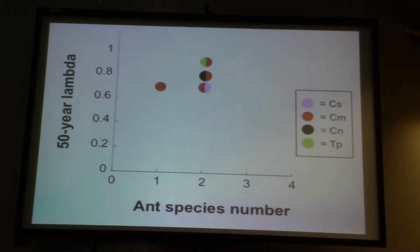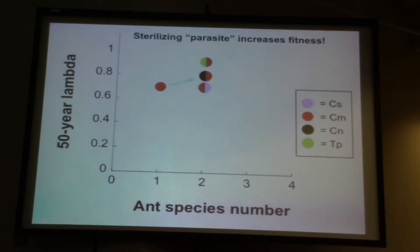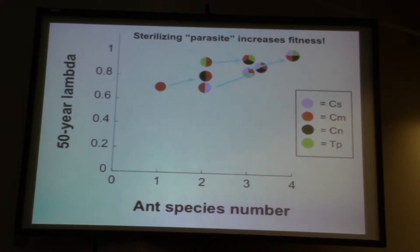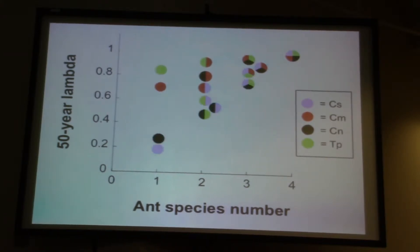The population lambda — the growth rate of the tree population — actually increases when we add a sterilizer to the mix. So from mimosi to mimosi plus nigriceps, we get a little bump in fitness. And interestingly, as we add a sterilizing parasite to the mix — represented by the little black chunk of Crematogaster mimosi in these little pies — we generally tend to get increases in fitness at the tree population level. We get increases in long-term tree population growth rates as we add a sterilizer into the mix.